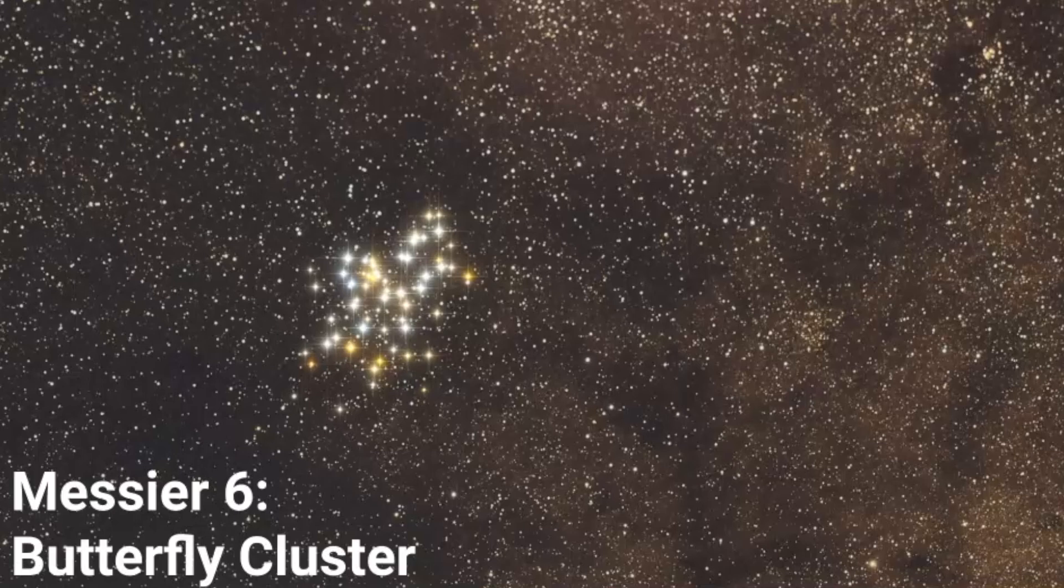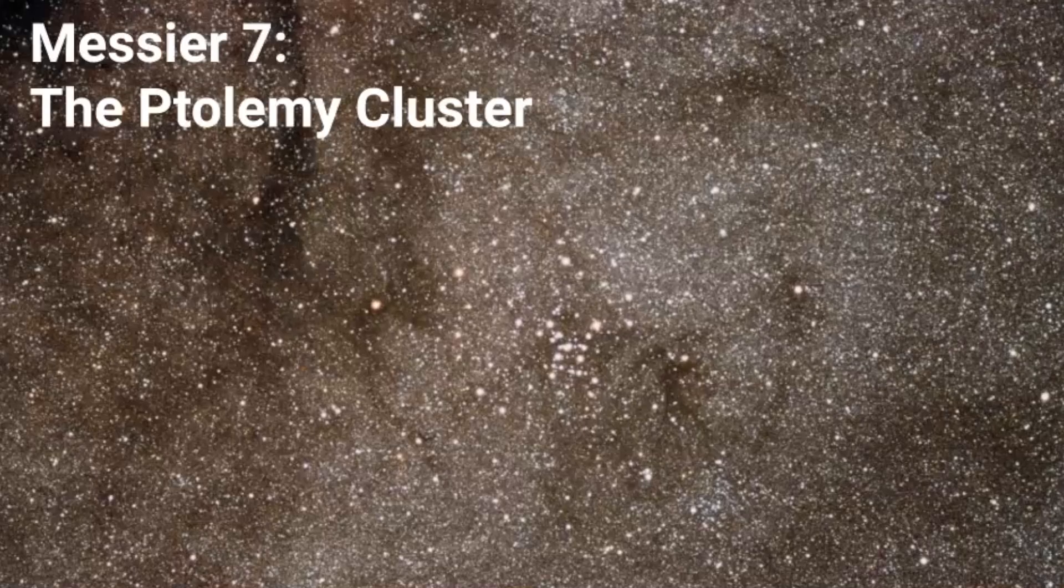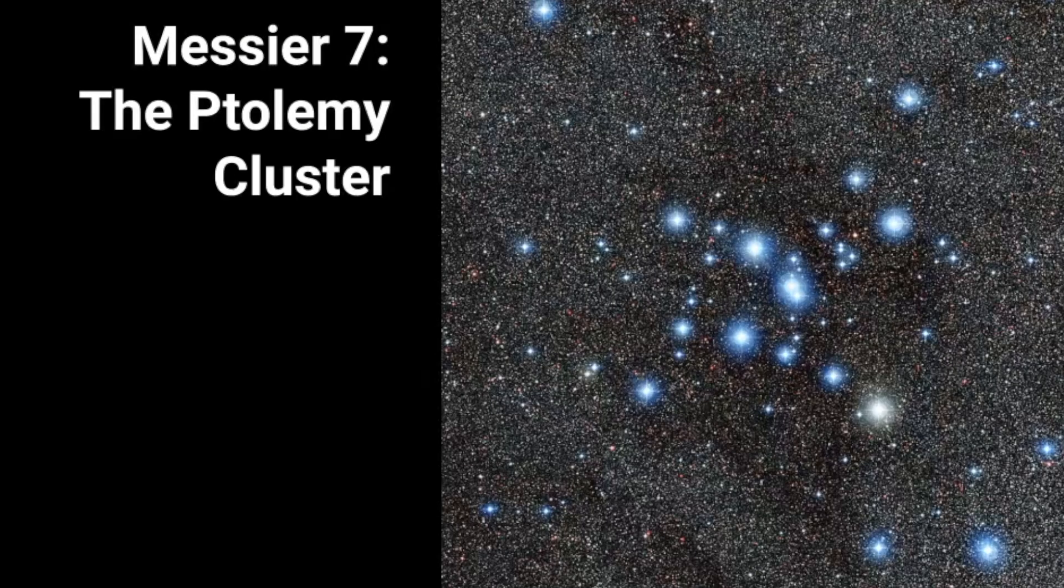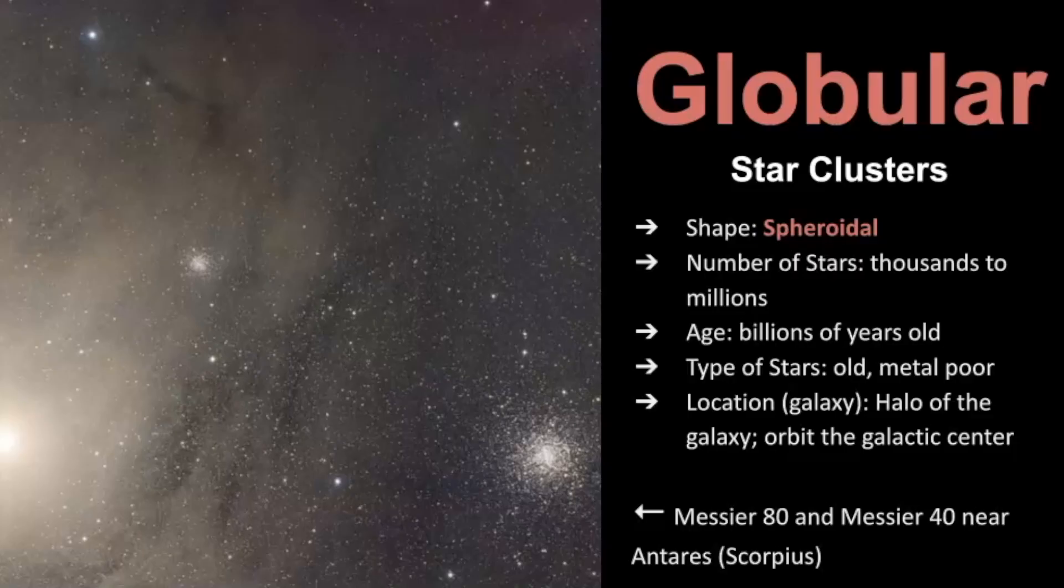Some other examples include Messier 6 and this is in Scorpius. We have Messier 7. This is also in Scorpius. These two can be seen with the unaided eye if you live in dark sky areas. Here's another version, you know, expectations versus reality. This is more the expectation side of that meme. The Ptolemy cluster is a really great one that you can see in Scorpius. And now I jumped ahead. So let's get into it.